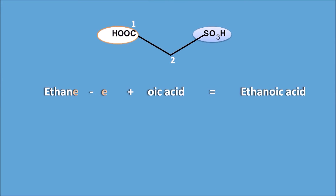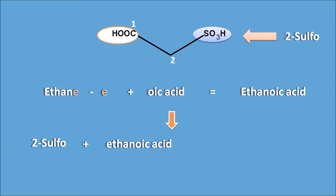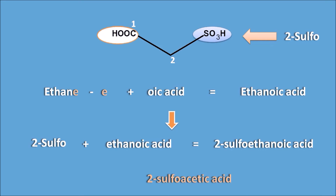The sulfonic acid side chain is present at the second position and is denoted by the prefix '2-sulfo'. The complete name of this compound is 2-sulfoethanoic acid. Commonly it can also be called 2-sulfoacetic acid, because the two-carbon carboxylic acid is called acetic acid.